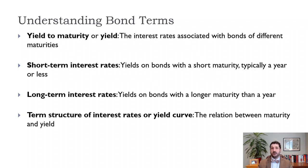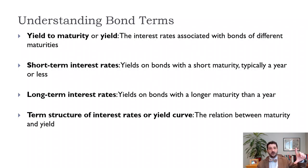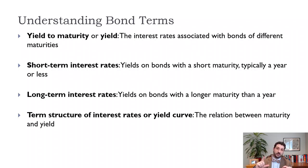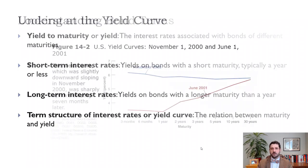From a macro perspective, we generally expect interest rates to be lower on short-term bonds and higher on long-term bonds. That is usually the case, but not always. An inverted yield curve — where interest rates are higher on short-term bonds — is often a sign of a recession or an upcoming recession.